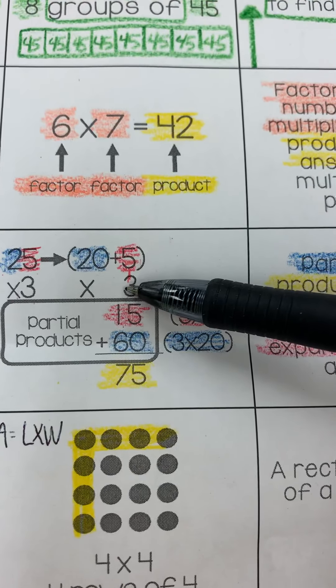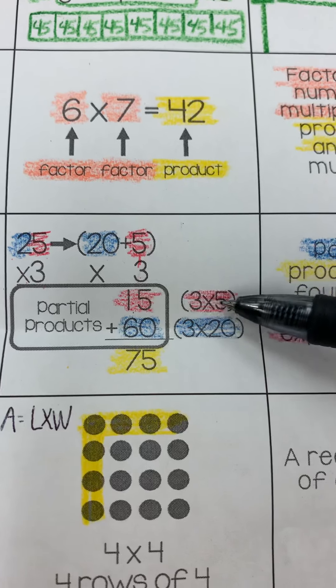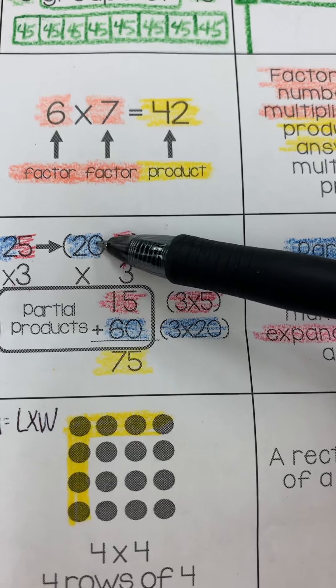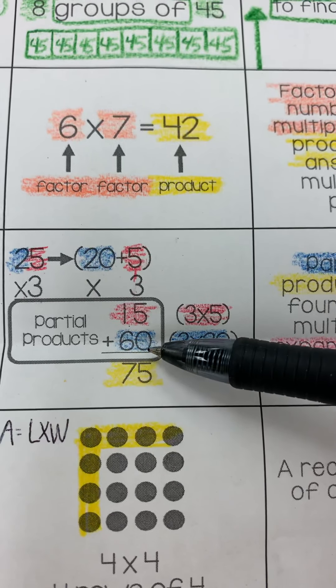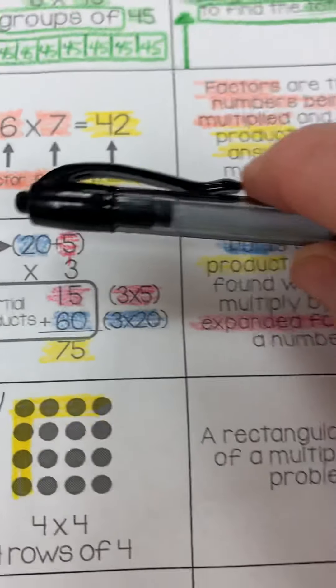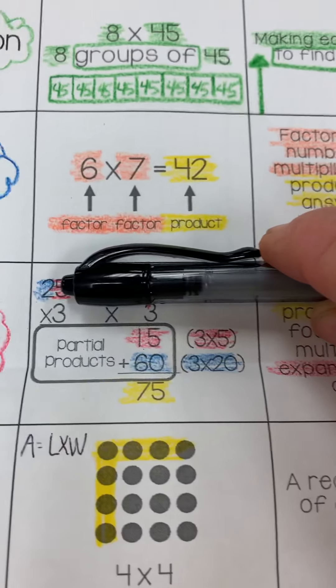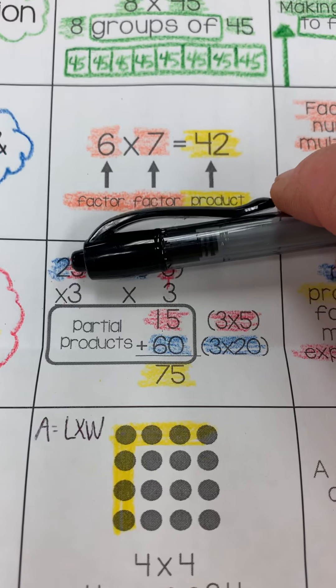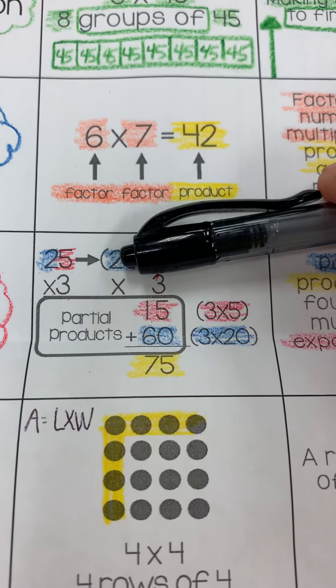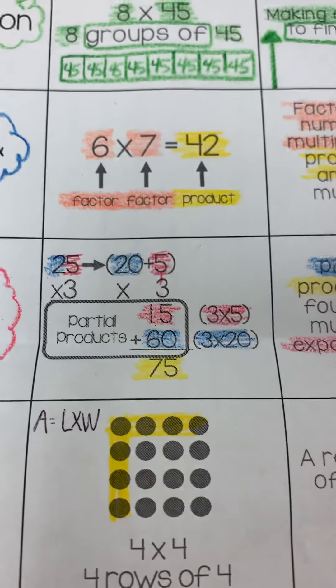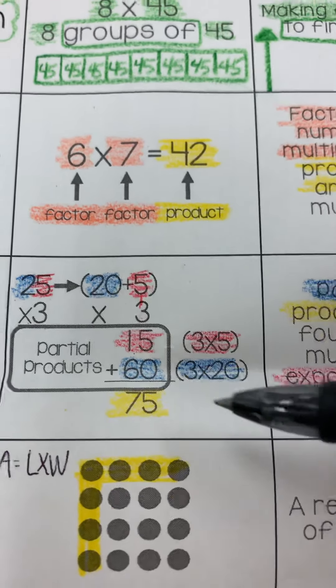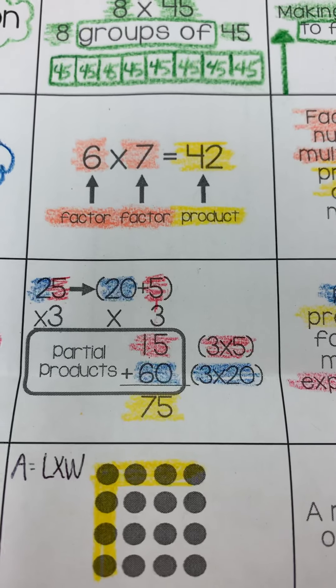The first thing you're going to do is 3 times 5 and get 15. Then you're going to do 3 times 20 and get 60. A great way to look at 3 times 20 is, remember your zeros rule. You can take 3 times 2, and that's 6, and stick a 0 back on it, and that's 60. Then you add these back together, and it makes the total of 75.